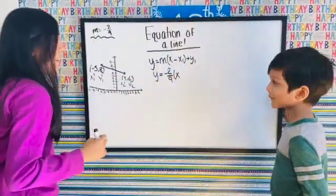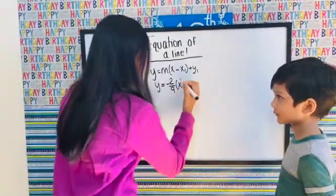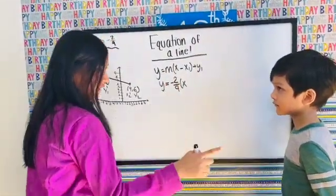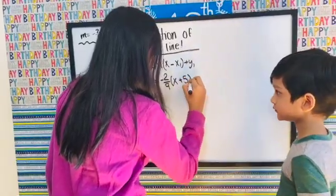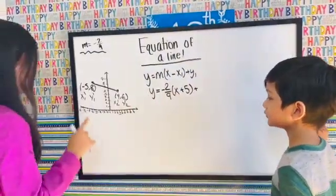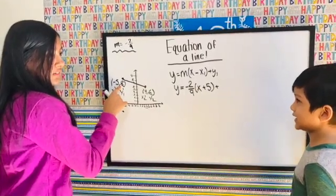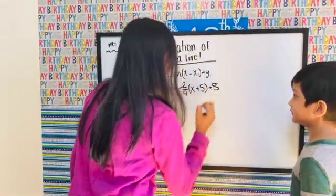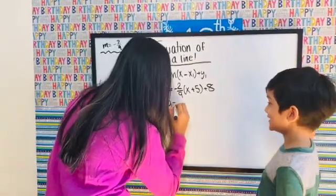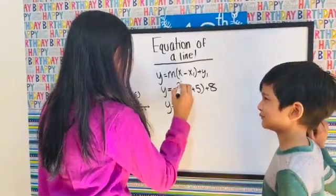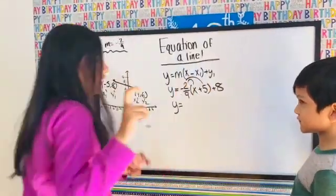We don't know x yet, but x1 we know is negative five. Minus minus gives you a plus, so it becomes plus five. Then plus y1 — and at least you're paying attention.